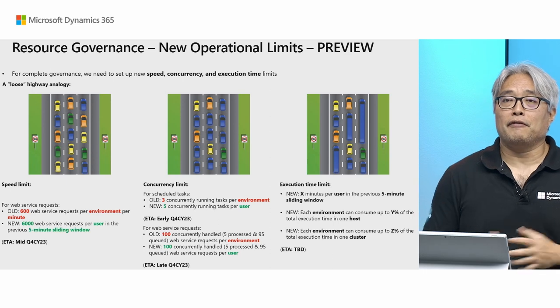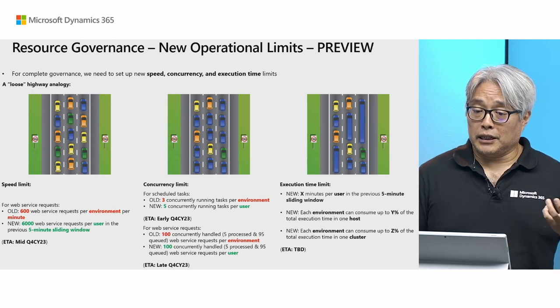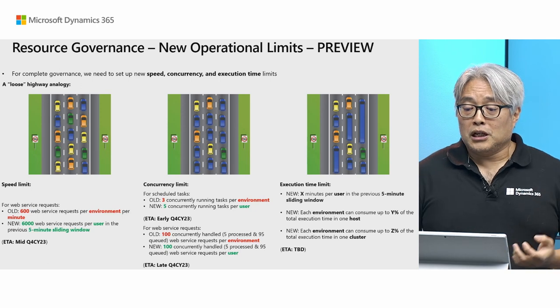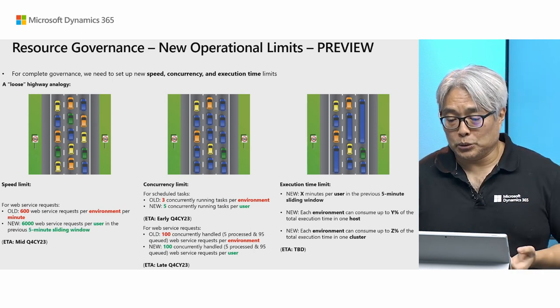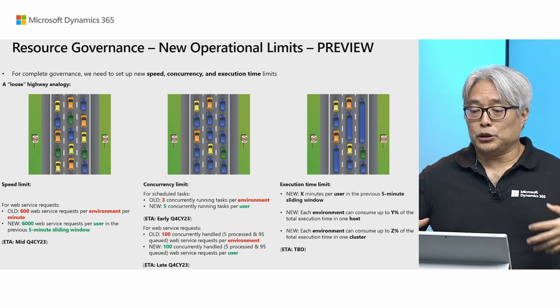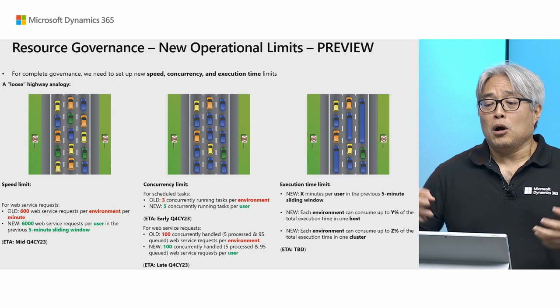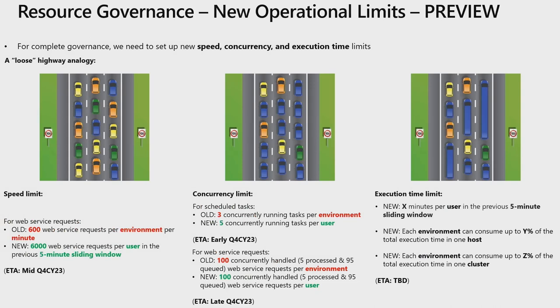In the future, you can expect the introduction of the execution time limit. For example, if we have a server instance with four cores, in a five-minute elapsed sliding window that allows 4 × 5 = 20 minutes of execution time. Within that 20-minute execution time, there is an X-minute allowance per user to consume. Under the hood, we will make sure each environment does not consume up to Y percent of the total execution time, or Z percent of the total execution time in a cluster. Those are limits planned for future incoming releases.